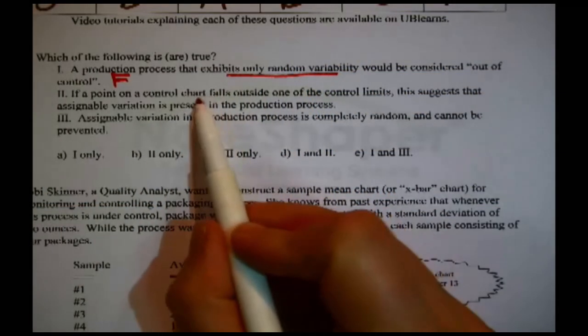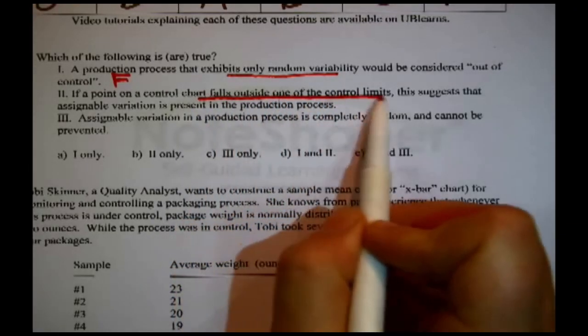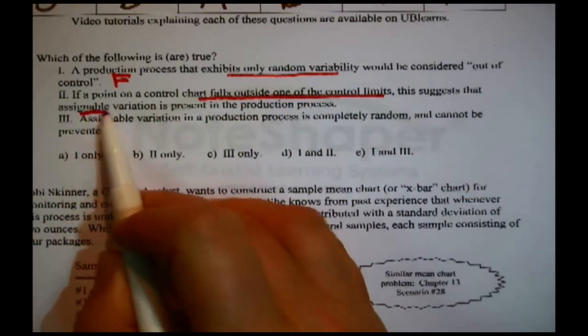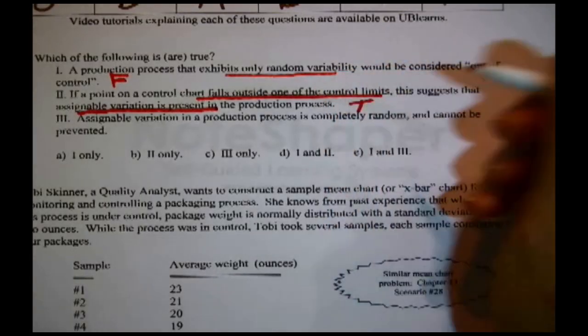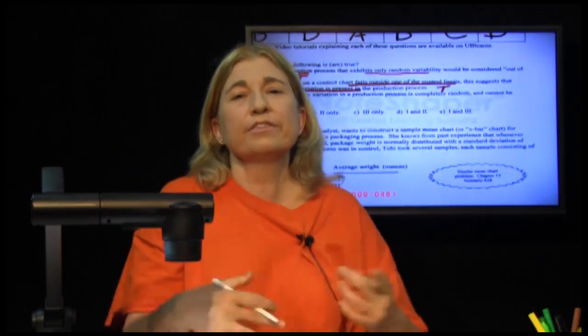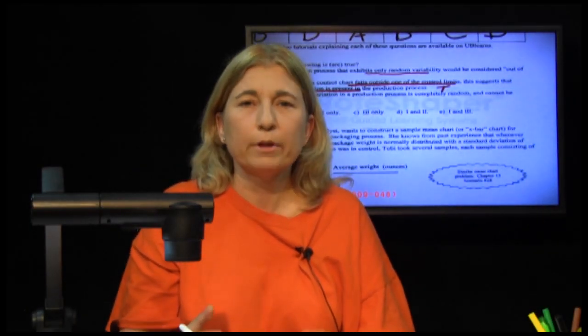Second one, if a point on a control chart falls outside one of the control limits, this suggests assignable variation is present in the production process. That is true. That is by definition what a control chart is for.